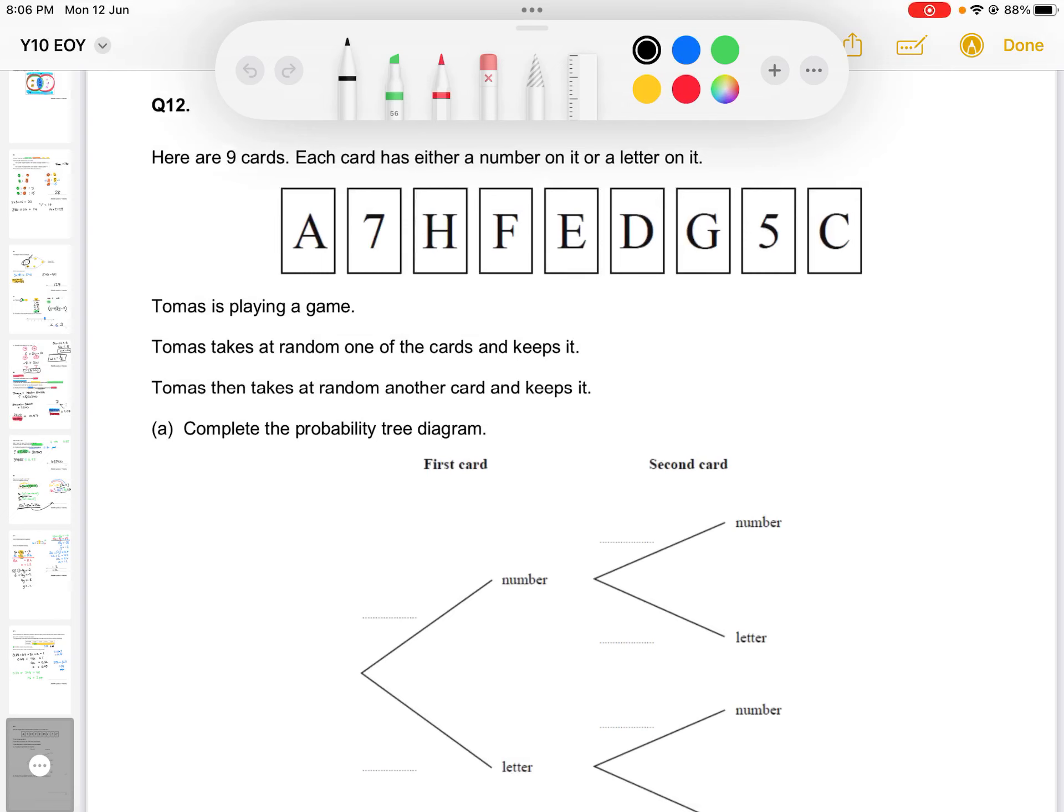Question 12. We have nine cards which have the following letters and numbers on them as shown. Thomas is playing a game. Thomas takes one of the cards at random and keeps it.